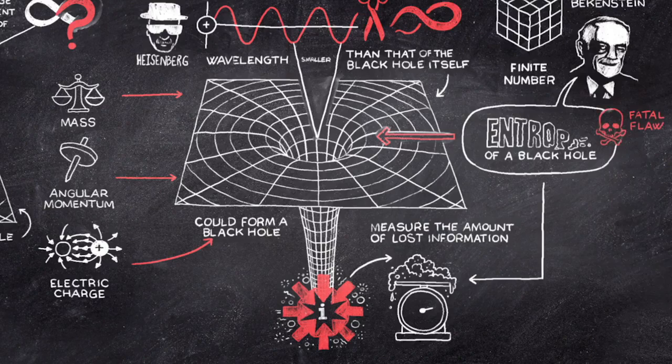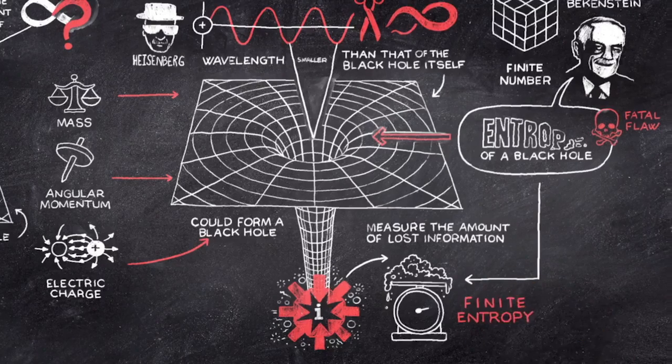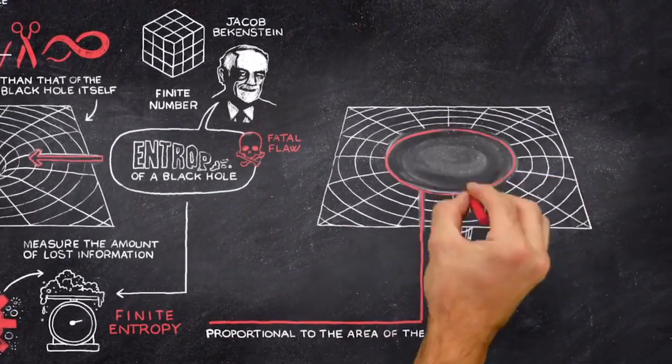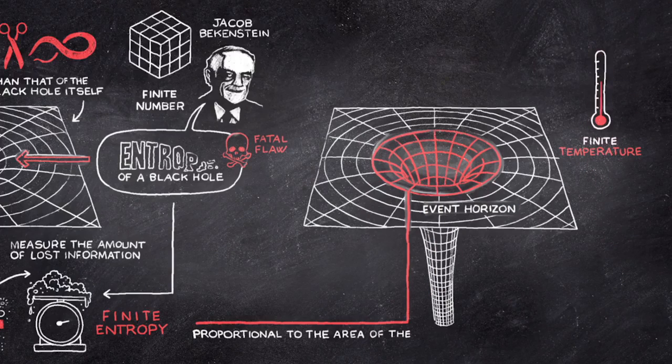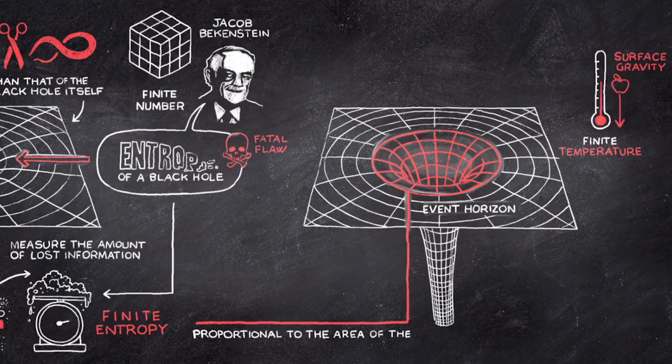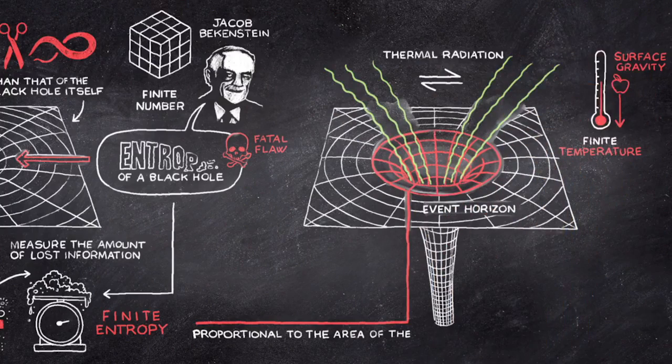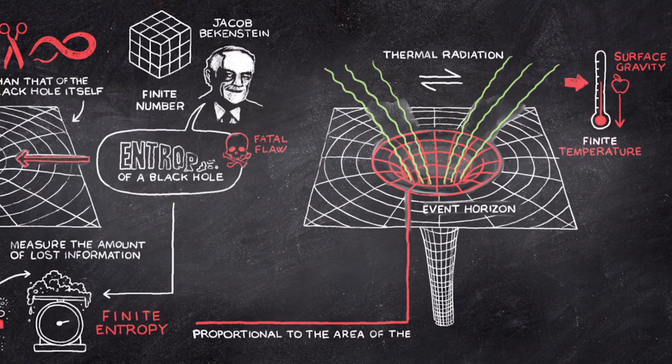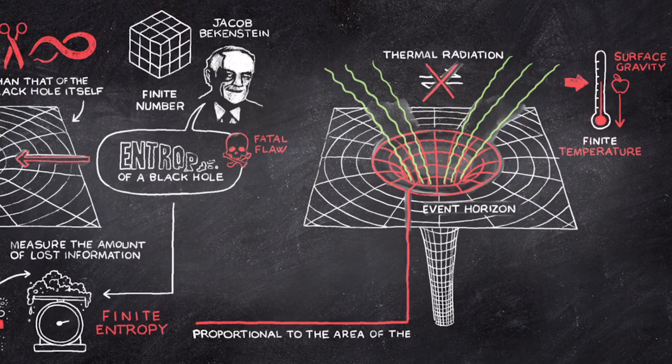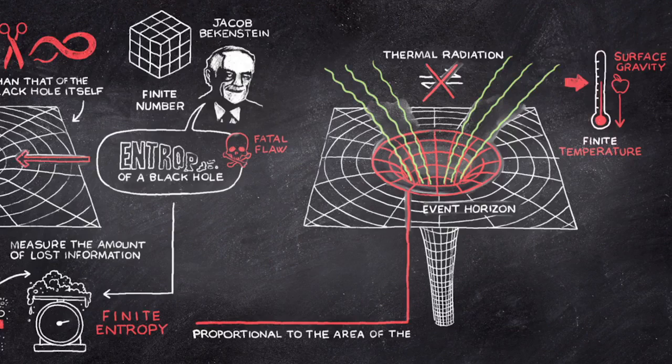The apparently fatal flaw in Bekenstein's suggestion was that if a black hole has a finite entropy that is proportional to the area of its event horizon, it also ought to have a finite temperature, which would be proportional to its surface gravity. This would imply that a black hole could be in equilibrium with thermal radiation at some temperature other than zero. Yet according to classical concepts, no such equilibrium is possible, since the black hole would absorb any thermal radiation that fell on it, but by definition would not be able to emit anything in return.